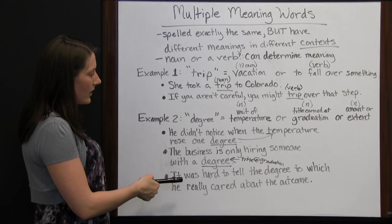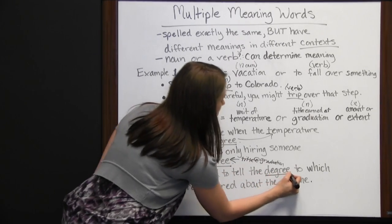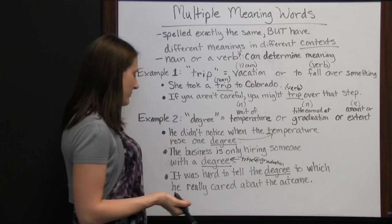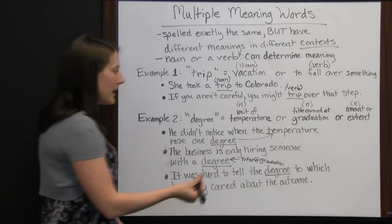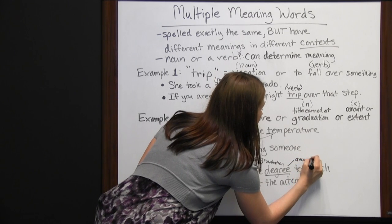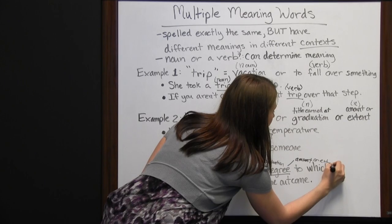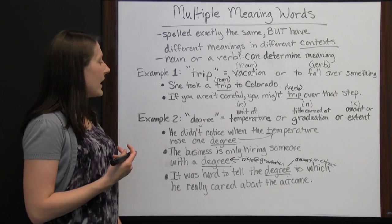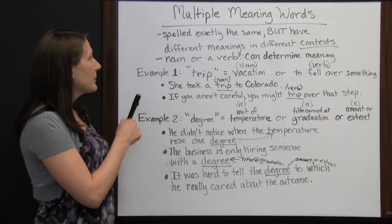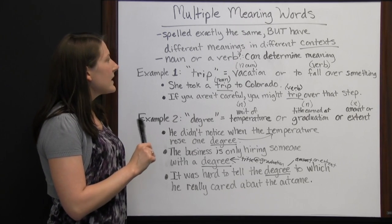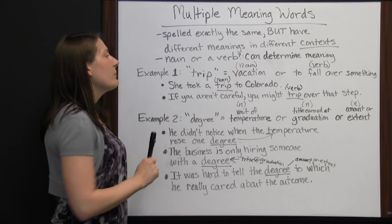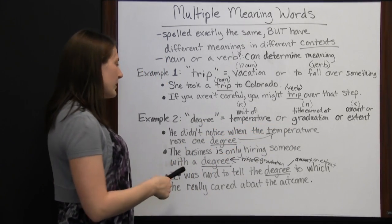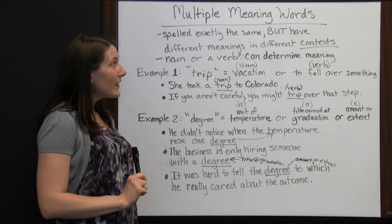Whenever you find words that could mean more than one thing, look at the context around the word and the whole sentence to see what would make sense. If you know multiple meanings of a word, try each definition to see which one makes sense, so you're understanding the sentence correctly. Those multiple meaning words can be tricky.